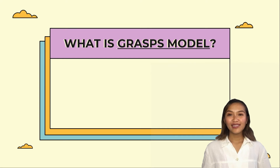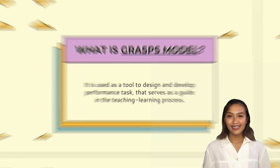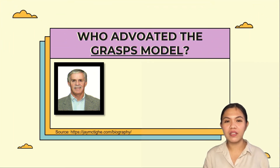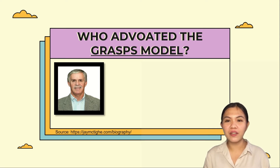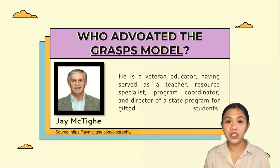Let's find out what the GRASPS model is. The GRASPS model is used as a tool to design and develop performance tasks that serves as a guide in the teaching-learning process. The people behind the GRASPS model are Jay McTie and Grant Wiggins. Jay McTie is a veteran educator, having served as a teacher, resource specialist, program coordinator, and director of a state program for gifted students. He is an accomplished author.